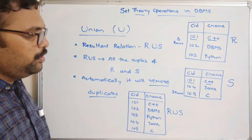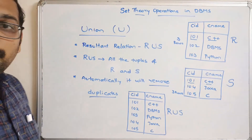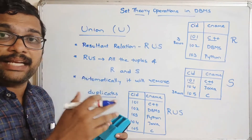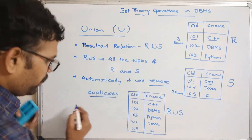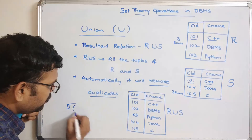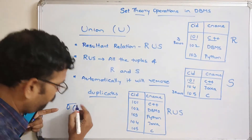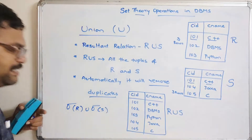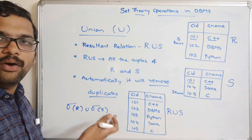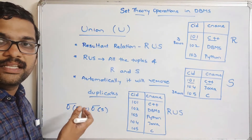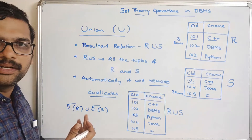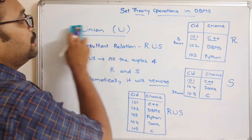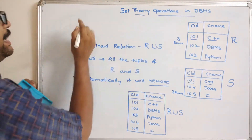In the previous session we saw unary operations like selection and projection. You can write the union simply as the selection of R union selection of S. That completes the union operation.